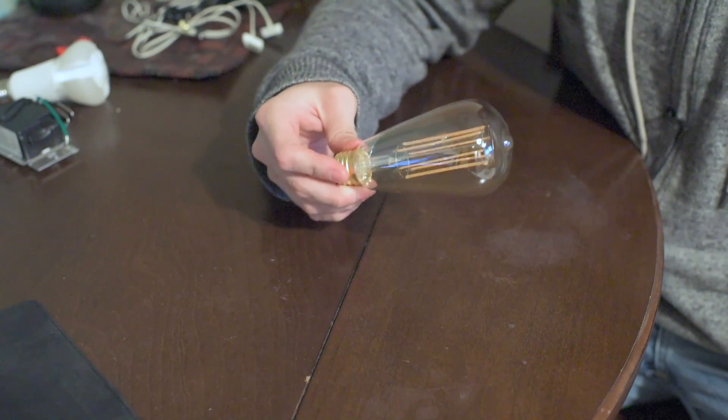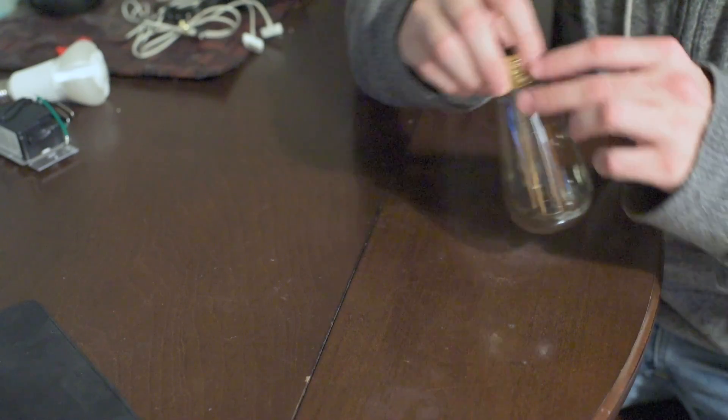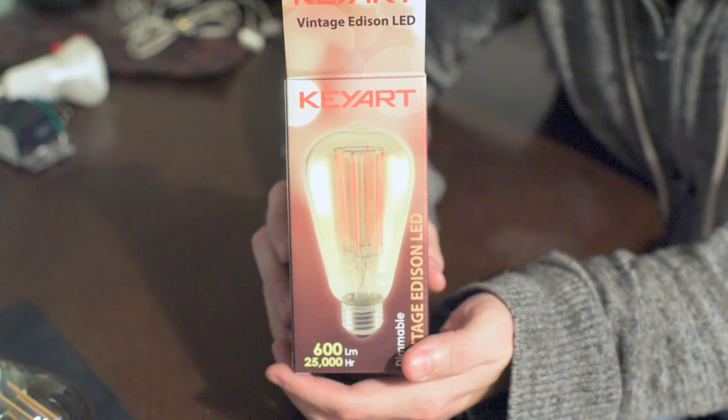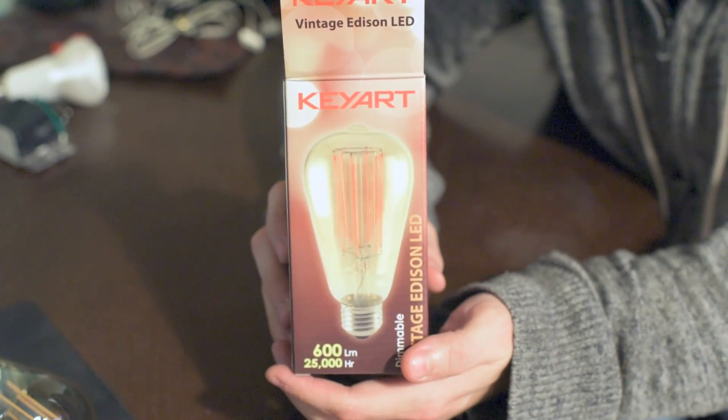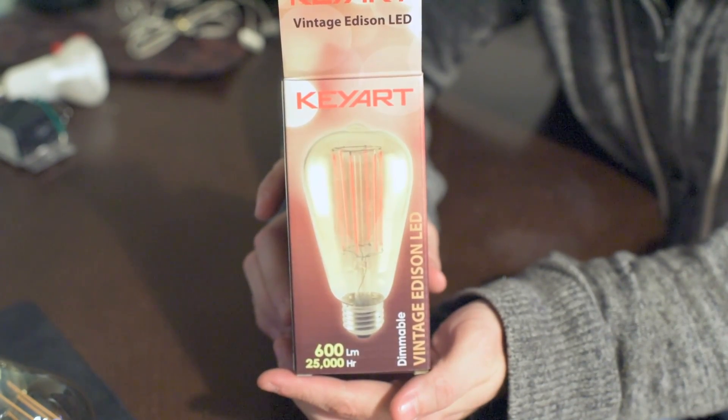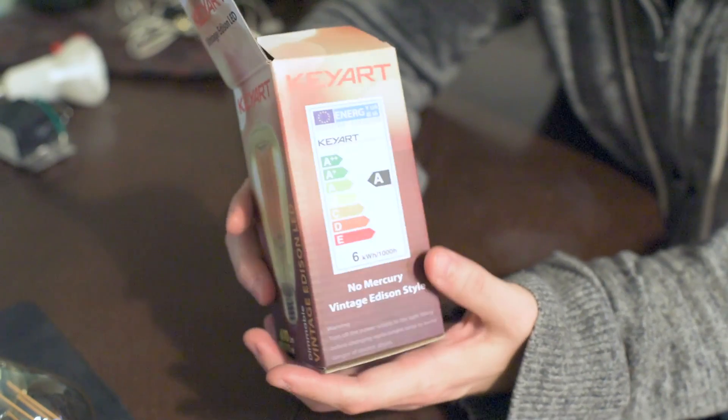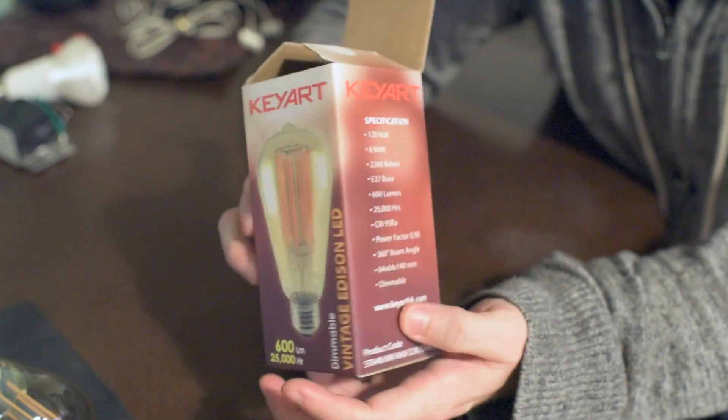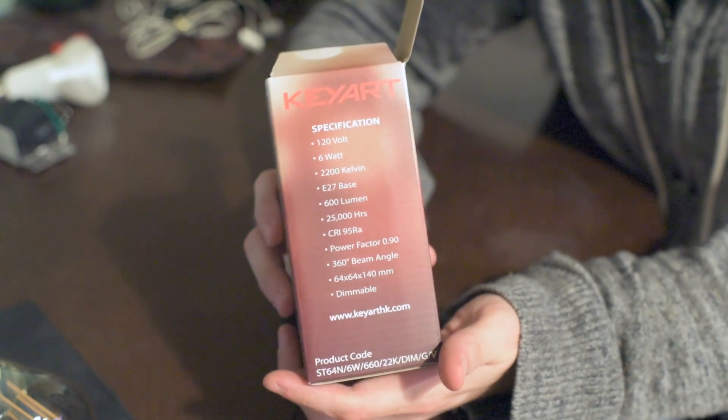And this is actually Dimmable. Hang on, let me go get the box. Okay, so I ordered a couple of these from Amazon and this is the KeyArt Dimmable Vintage Edison LED. 600 lumen. And I think you can see that there.